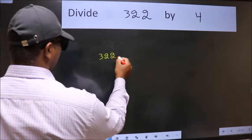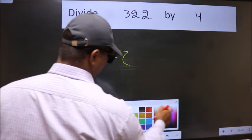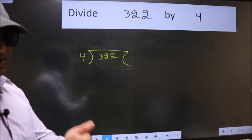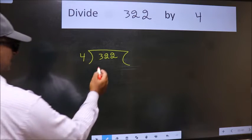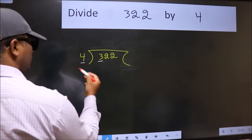322 here, 4 here. This is your step 1. Next, here we have 3 and here 4. 3 is smaller than 4.